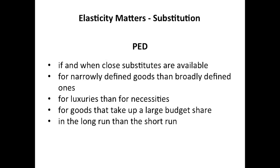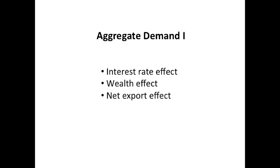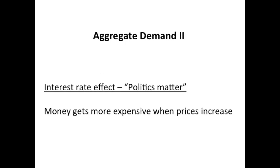Now we have this general behavioral orientation in economics, and then we have the overall situation in the economy: interest rate, wealth effect, and net export effect. Interest rates — this is what we will do in the next session. Interest rates are a matter of money, a matter of the monetary system, and it is a political decision. Because the interest rate is defined by two mechanisms: on the one hand it's a matter of the market — money is a commodity and as such it can be traded.